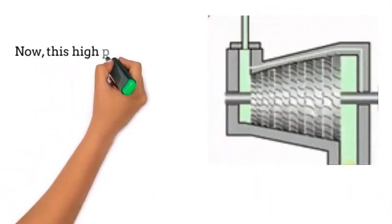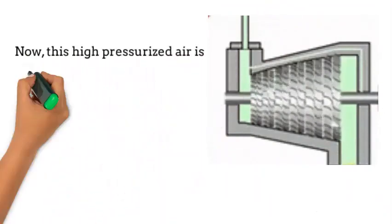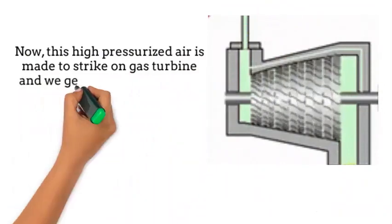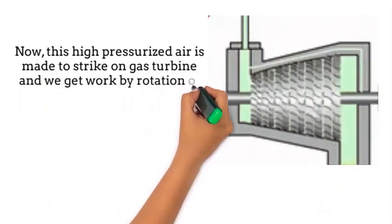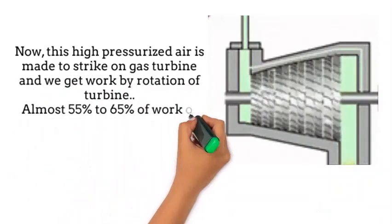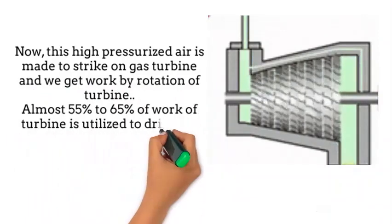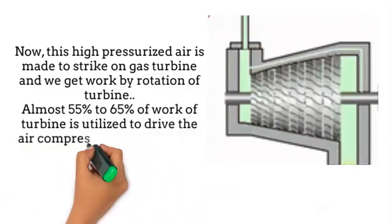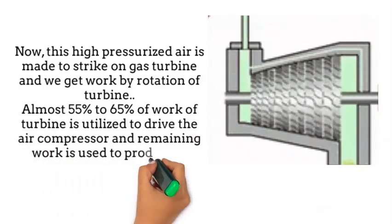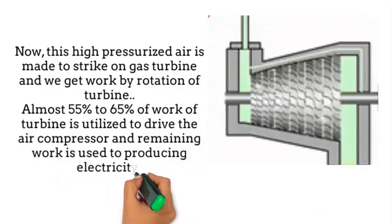Now, this high pressurized air is made to strike on gas turbine, and we get work by rotation of turbine. Almost 55% to 65% work of turbine is utilized to drive the air compressor, and remaining work is used to producing electricity.